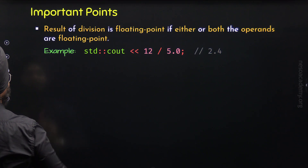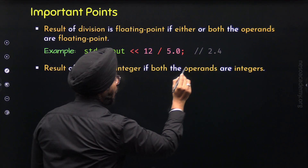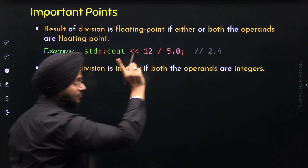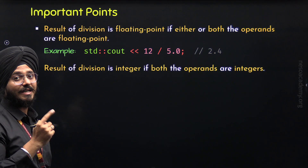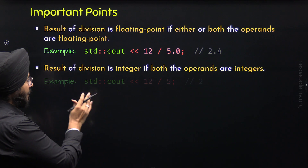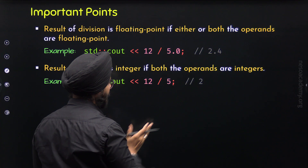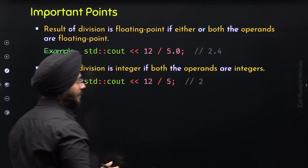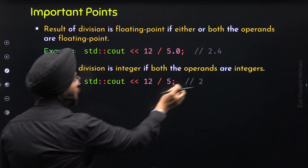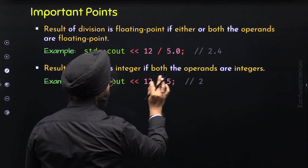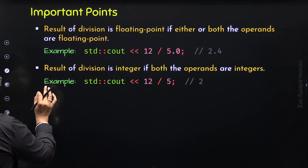Now the second point: the result of division is integer if both the operands are integers. When both the operands are integers, the result of division is an integer. So in this example, we have two integer operands, and we will get an integer value as the result — we are getting 2, not 2.4, because we have two integer operands.